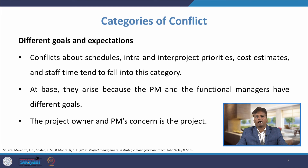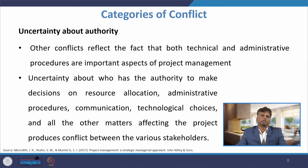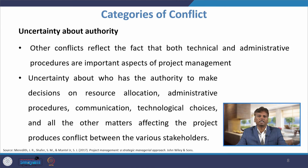Conflict about authority arises at base because the project manager and the functional managers have different goals. The project owner and project manager's concern is the project, but there are different perspectives on the objectives, which leads to conflict. The second source, uncertainty about authority, reflects the fact that both technical and administrative procedures are important aspects of project management. Uncertainty about who has authority to make decisions on resource allocations, administrative procedures, communication, and technological choices produces conflict between stakeholders.